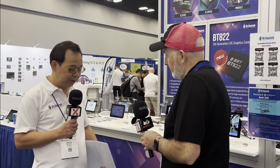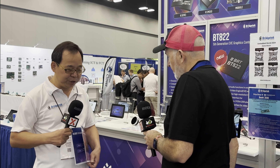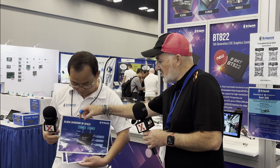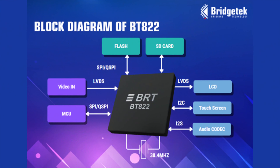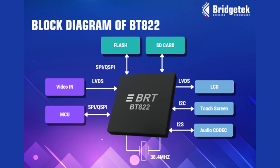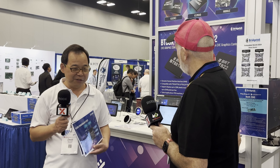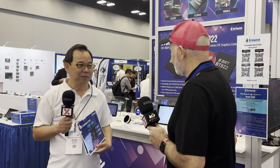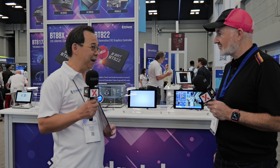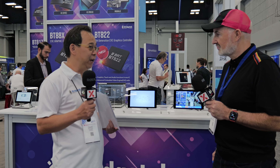Where does your chip sit — does it take the place of the MCU, or does it sit next to the MCU? Our chip basically sits between the MCU and the LCD display. So it's like a driver? It's actually a graphics content provider, so it allows any MCU — even a low-cost, low processing power MCU — to drive a high resolution HMI, human-machine interface.